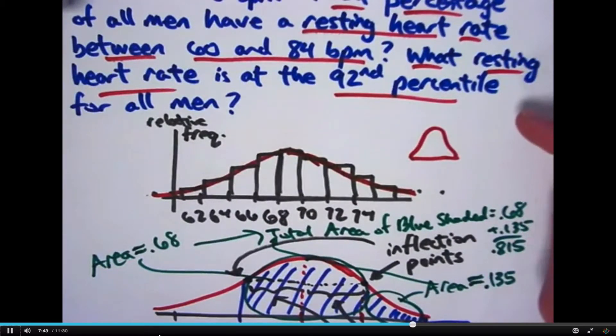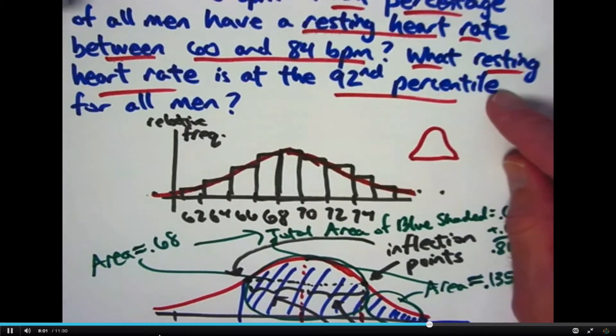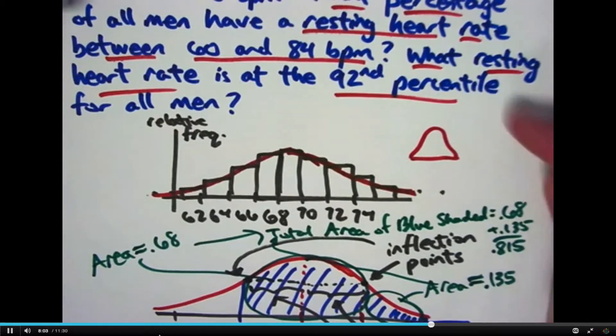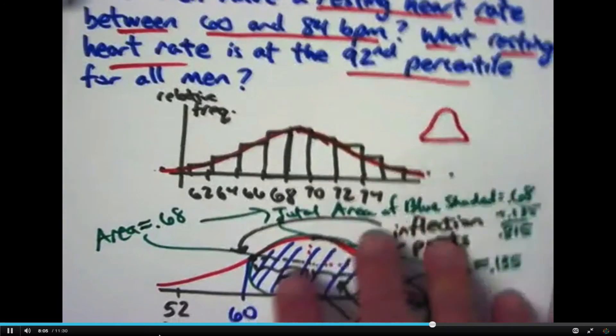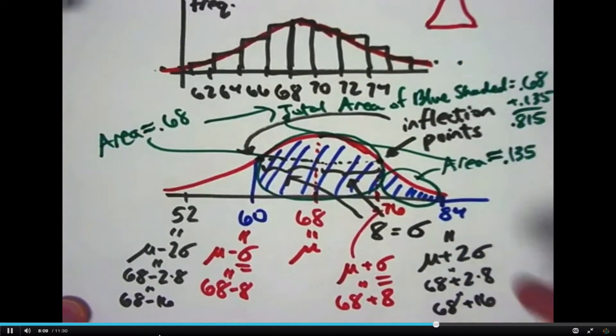What resting heart rate is at the 92nd percentile? Let's see if we can do that in a couple minutes here. 92nd percentile means it's a high heart rate. 92% of the people have heart rates less than that. That's what it means. We're after a heart rate, a resting heart rate, such that 92% of all the adult males have a heart rate less than that.